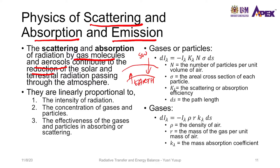The effect of these gases and aerosols on the radiation depends on three properties. The first is the intensity of the radiation. The second is the concentration of the gases and particles. And the third is the effectiveness of the gases and particles in absorbing or scattering, because some gases and particles are able to absorb and scatter radiation more effectively than others.